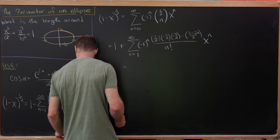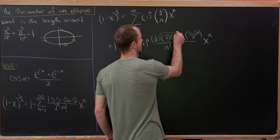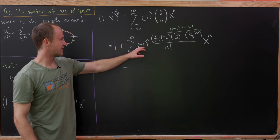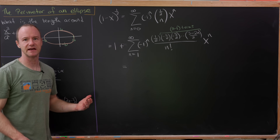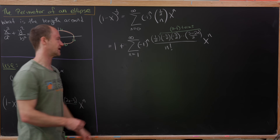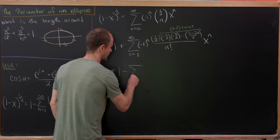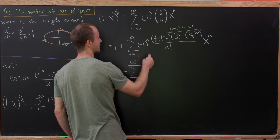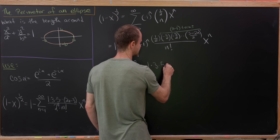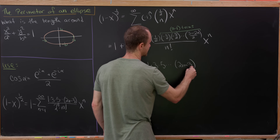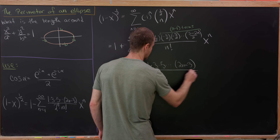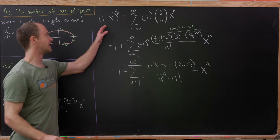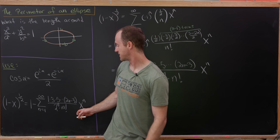Now let's put this all together. There are n − 1 negative 1s from the descending product and n negative 1s from the (−1)^n factor — combining them nets a single −1, giving a minus sign. So we get 1 minus the sum as n goes from 1 to infinity of (1 × 3 × 5 × ⋯ × (2n − 3)) over (2^n times n factorial) times x to the n. That's our formula for (1 − x)^(1/2).